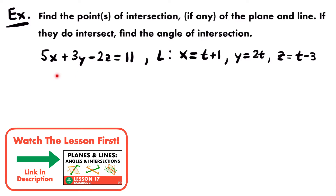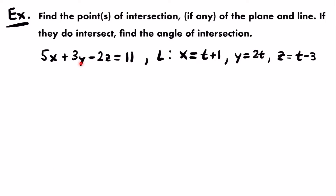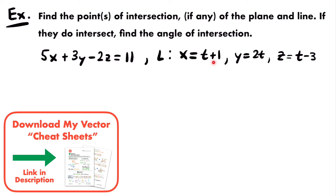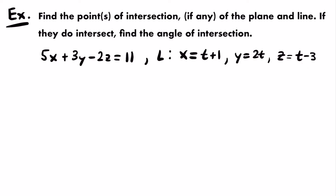We're given the equation of a plane: 5x plus 3y minus 2z equals 11. And then we're given a set of parametric equations that represent a line: x equals t plus 1, y equals 2t, and z equals t minus 3. To determine if this line and plane have any points of intersection, we plug the parametric equations into the plane equation.